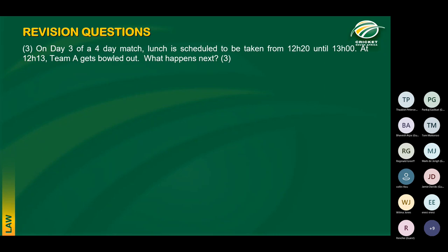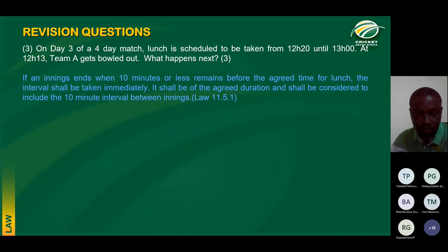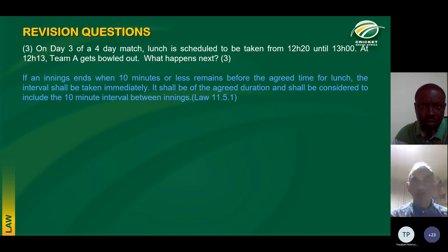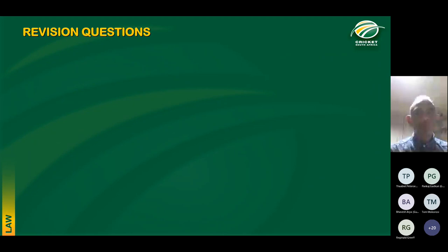Question 3: Lunch is to be taken from 12:20 till 13:00, but the side gets bowled out at 12:13 — what happens next? The law tells us that if an innings ends 10 minutes or less before the agreed time for lunch, the interval shall be taken immediately and shall be the agreed 40-minute duration. So the lunch break will be 40 minutes, from 12:13 till 12:53, and the change of innings interval shall be included in the lunch break.